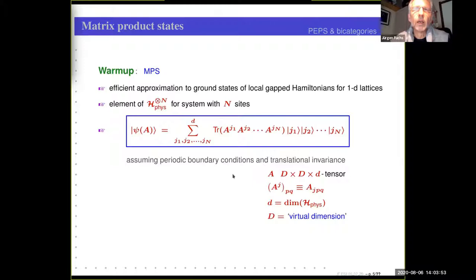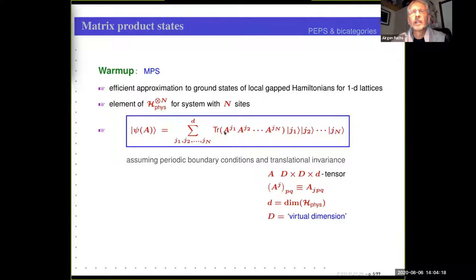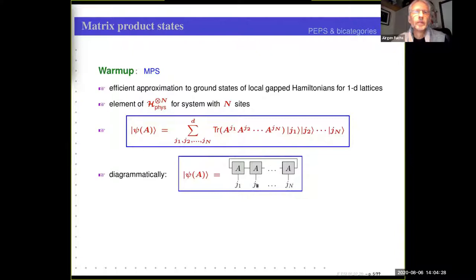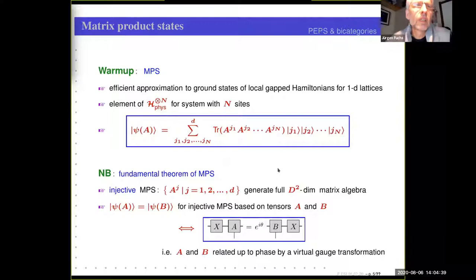The input is a certain rank-3 tensor where two legs have dimension D — that's called the virtual dimension — and a third leg has dimension d, that's the dimension of the physical space at each site. The A_j that appear in the formula are just the D-by-D matrices which I get when j has a fixed value. Diagrammatically, this is expressed by a picture that certainly many of you have already seen. Let me mention the so-called fundamental theorem of MPS.